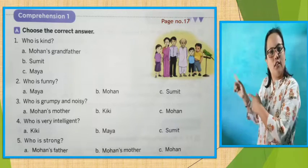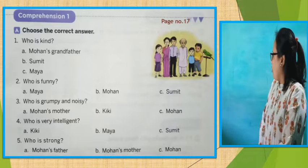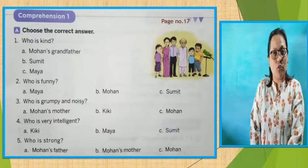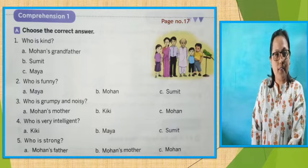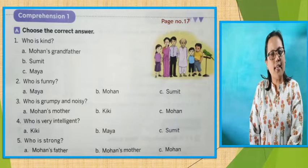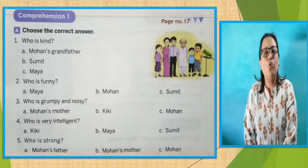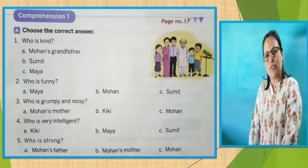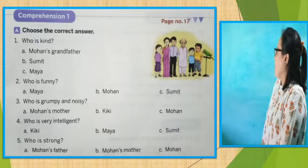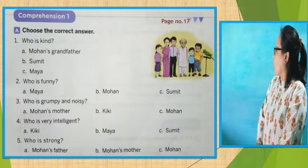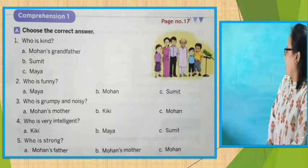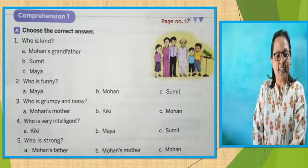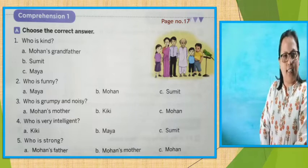Let's go to number 3. Who is grumpy and noisy? Grumpy means — I told you — grumpy means not very happy. You can say sad. Who is grumpy and noisy? Number A, Mohan's mother. Number B, Kukiki. Number C, Mohan. Who is grumpy and noisy? Yes — number B, Kikiki.